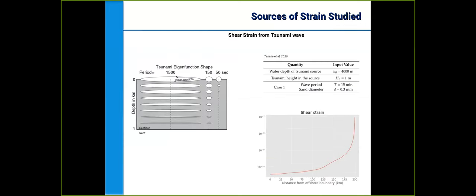The other source of strain we're also looking into is the shear strain caused by the traveling tsunami wave. The interest in this came from noticing that the vertical displacement or vertical particle motion tends to decay with depth. However, the horizontal displacement tends to remain more or less stable throughout the water depth.